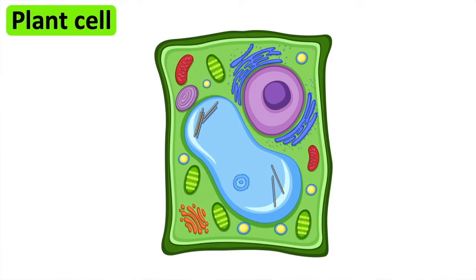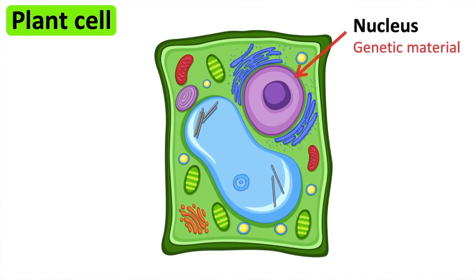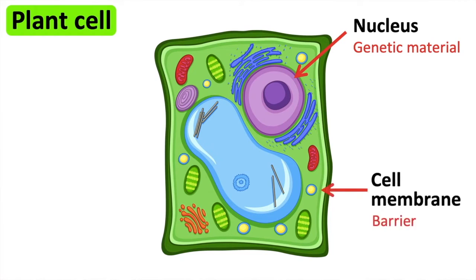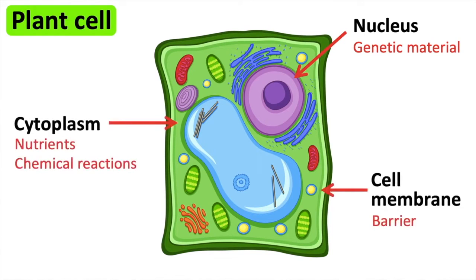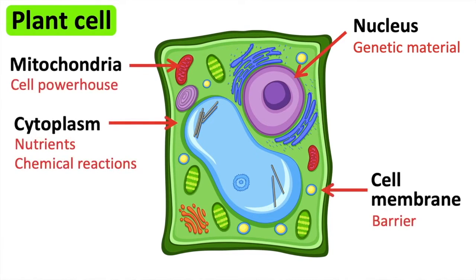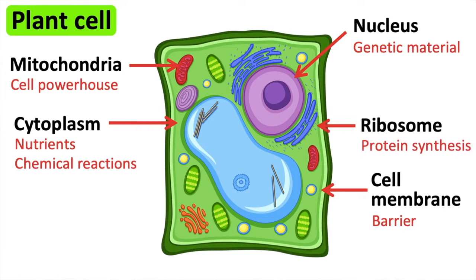Plant cells usually have a regular shape. They contain a nucleus, cell membrane, cytoplasm, mitochondria and ribosomes.